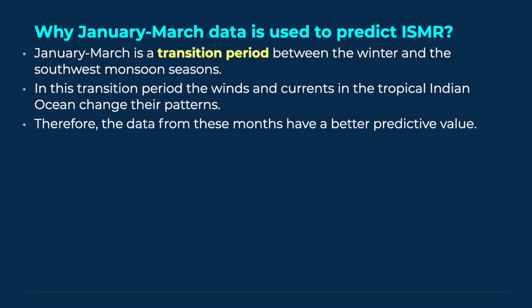Why is January-March data used to predict Indian summer monsoon rainfall? January-March is a transition period between the winter and the southwest monsoon seasons. In this transition period, the winds and currents in the tropical Indian Ocean change their patterns. Therefore, the data from these months have a better predictive value.